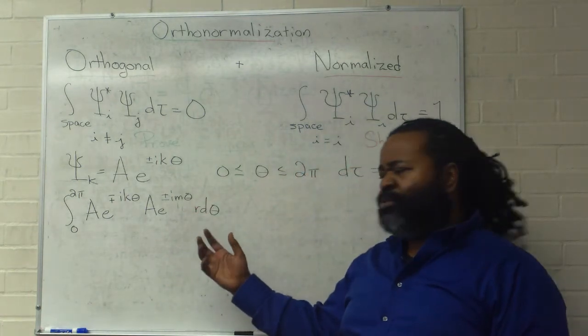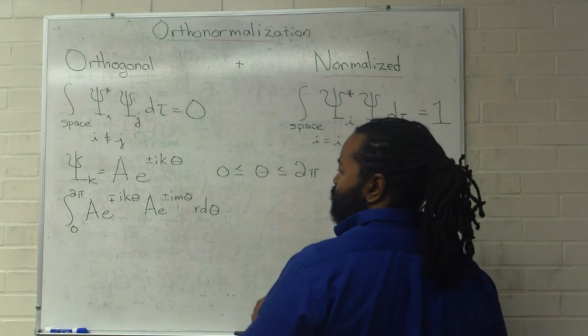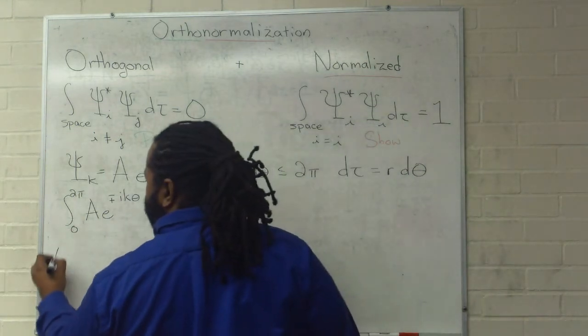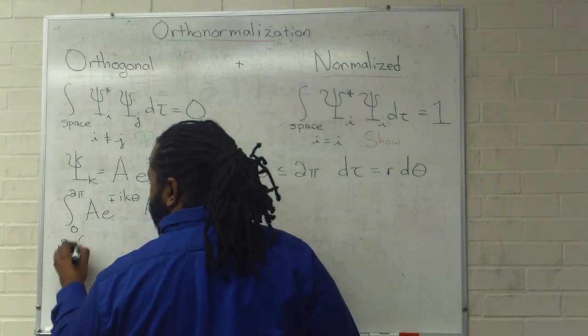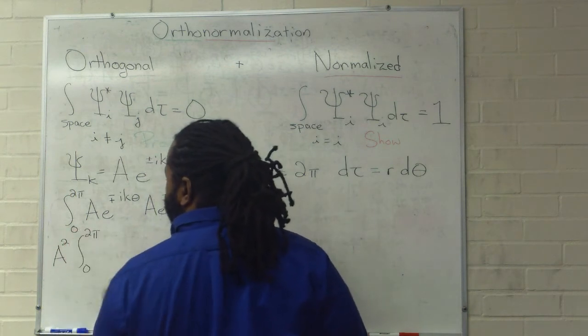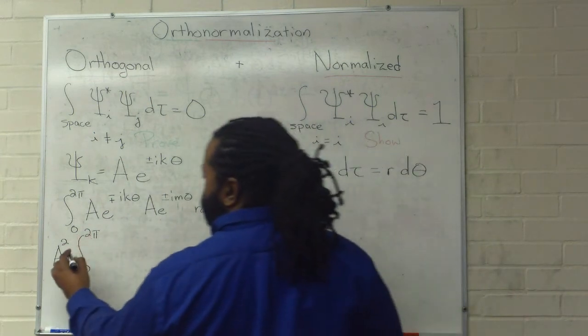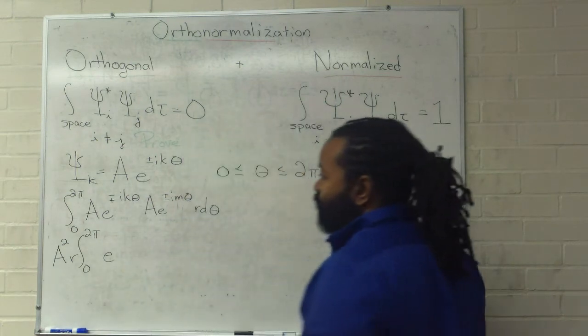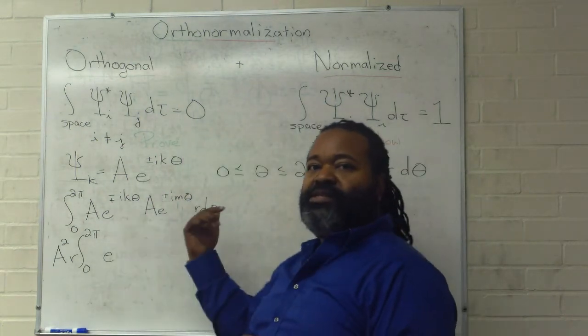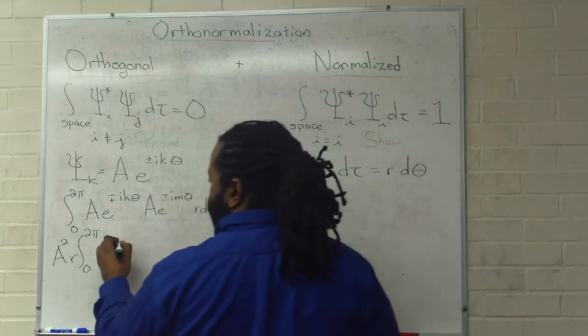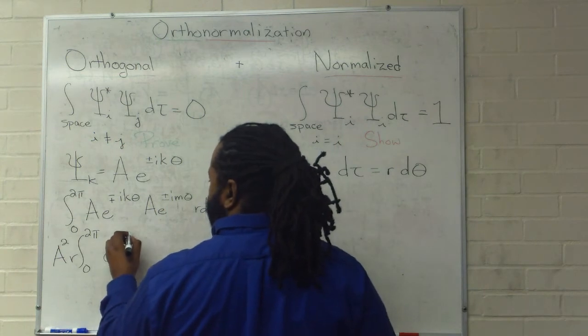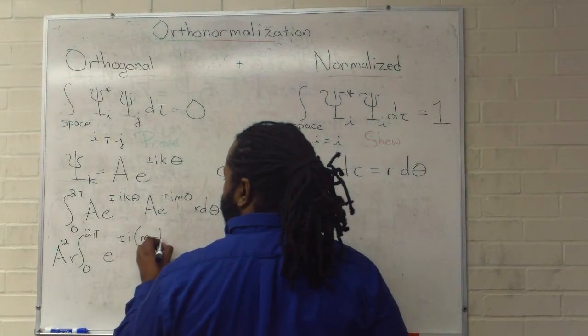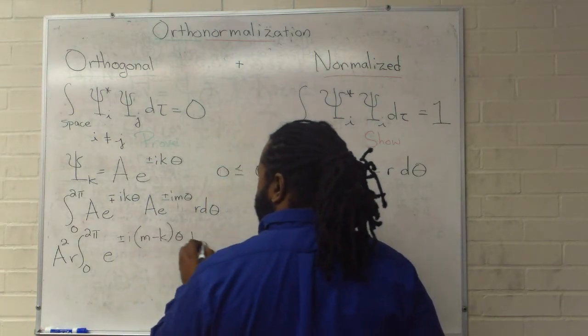So, at this point, we have to do a little bit of awful algebra. And we want to try to prove that this whole thing is going to be 0. So, what I'm going to do is pull out the a squared. Integral remains from 0 to 2 pi. I can also pull out the r. And what I'm left with then is e. And I have to combine these guys. So, we're going to have plus or minus i m minus k theta d theta.